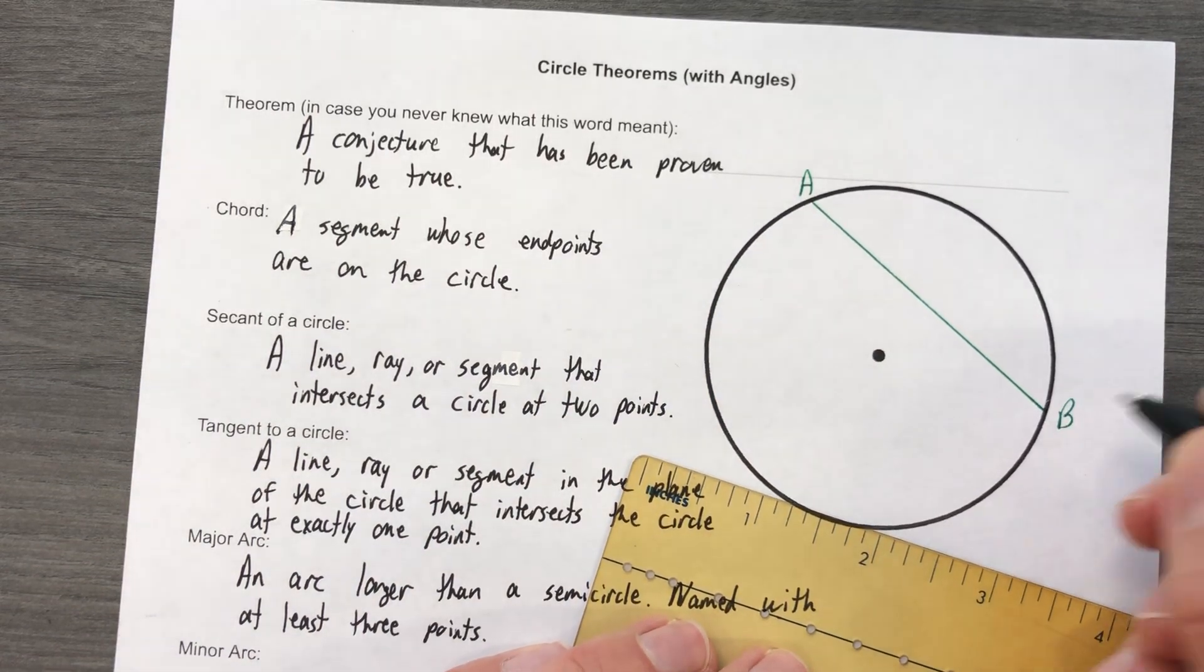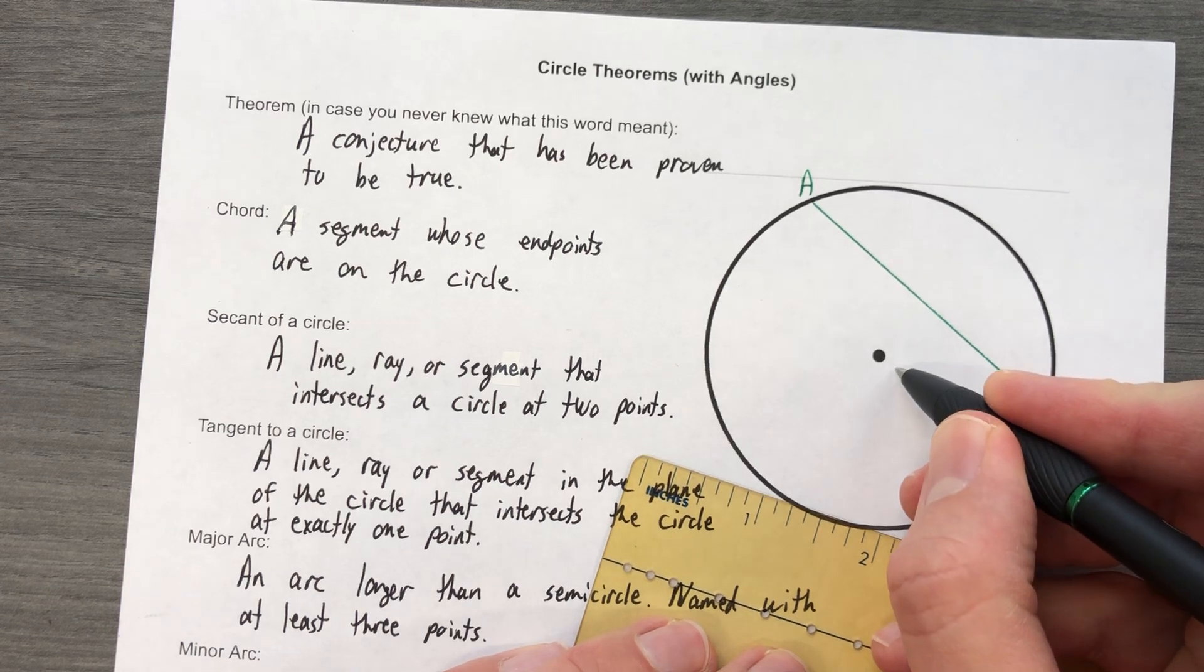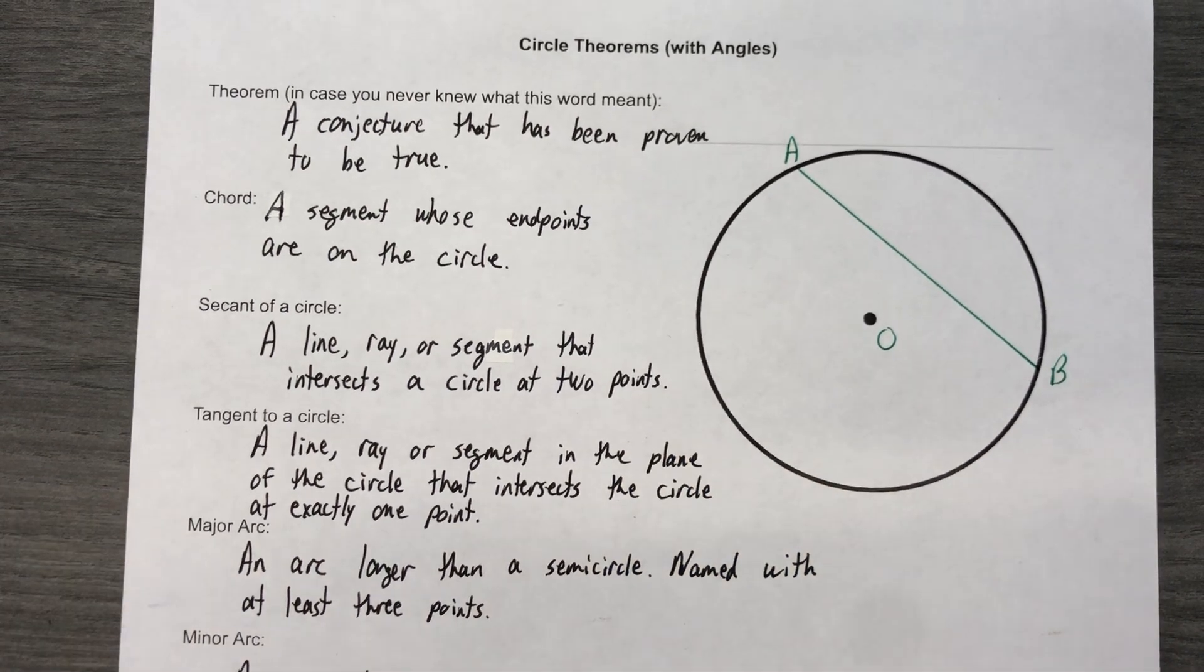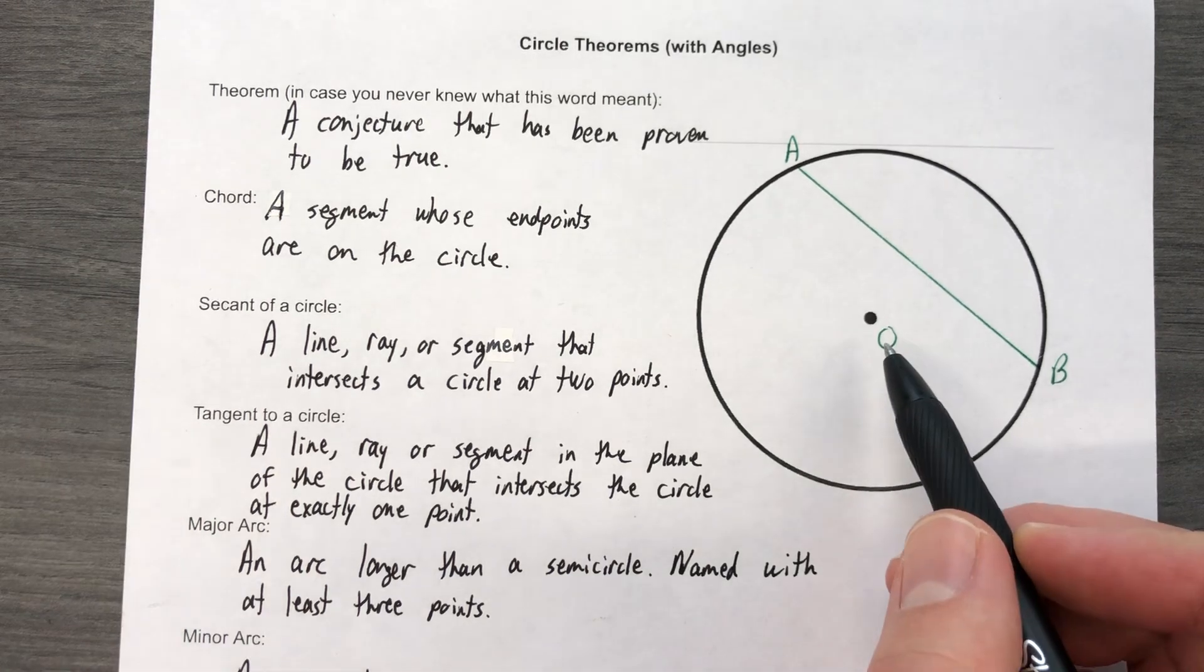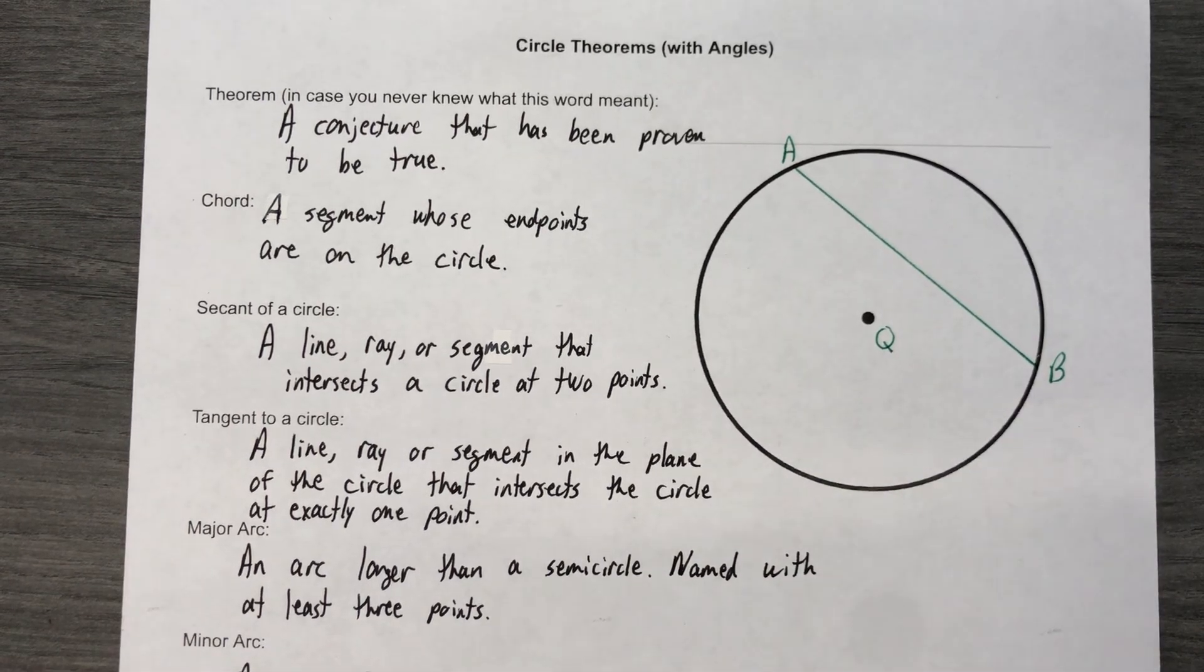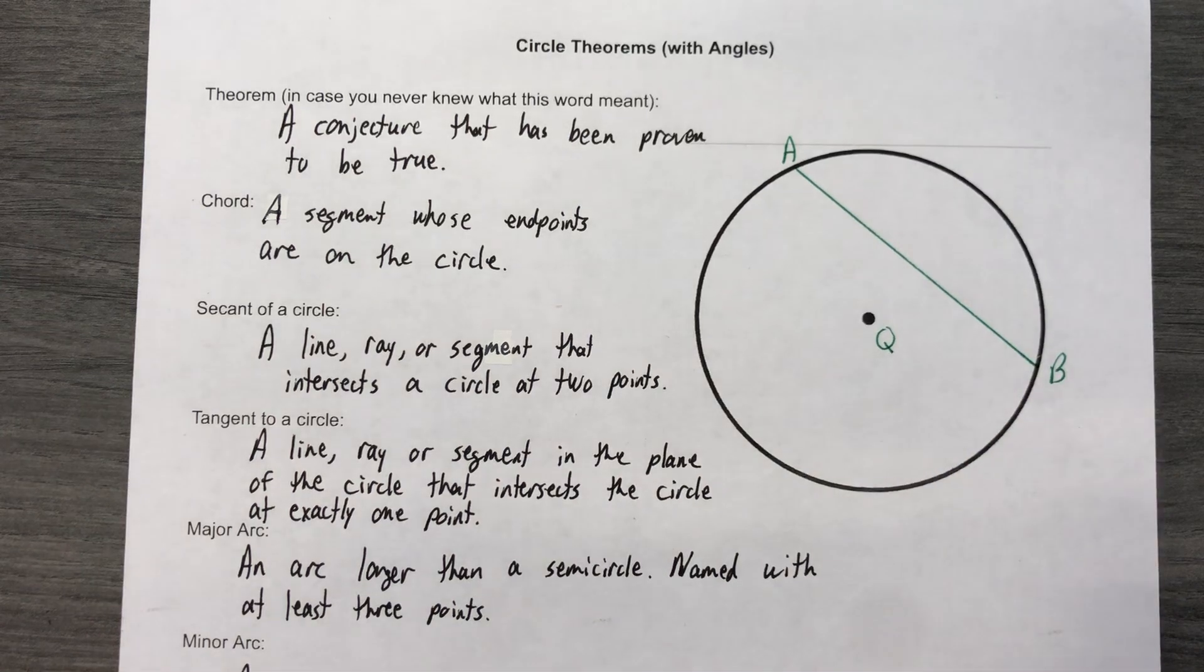We're gonna say that's A, that's B. We're gonna call the circle circle O. By the way, you always name a circle based on its center point, so if I'm gonna talk about this circle I would say this is circle O, or if this was a Q it'd be circle Q. So AB is a chord.